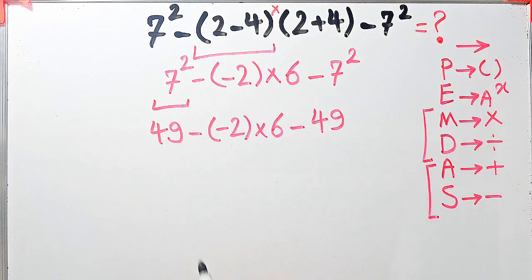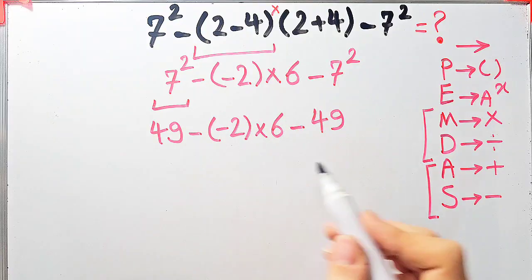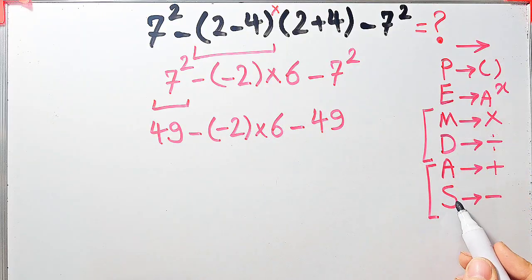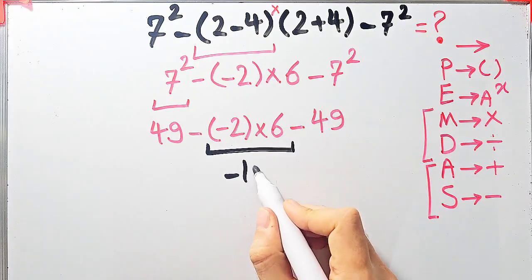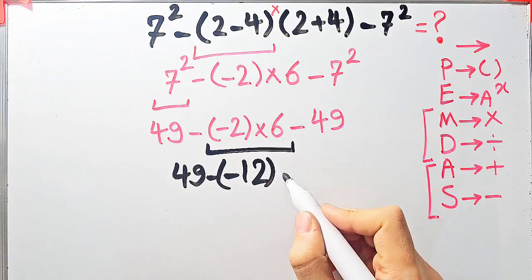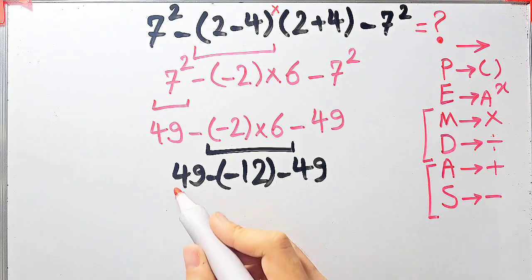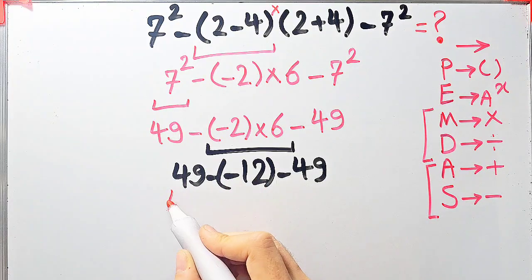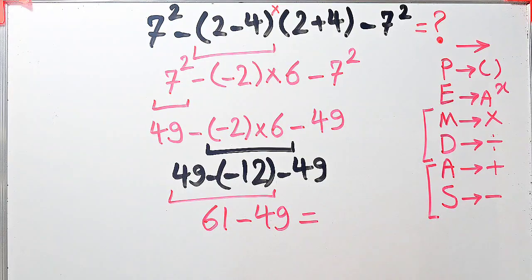Now we have subtraction and multiplication. Because multiplication has higher priority, we do negative 2 times 6 equals negative 12. Now the question is 49 minus negative 12, then minus 49. 49 minus negative 12 equals 61. Now the question is 61 minus 49. 61 minus 49 equals 12, and the final answer of this question equals 12.